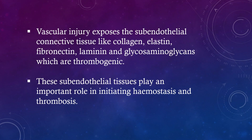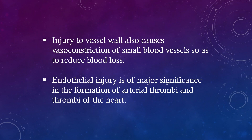Vascular injury exposes the subendothelial connective tissue like collagen, elastin, fibronectin, laminin and glycosaminoglycans, which are thrombogenic. These subendothelial tissues play an important role in initiating hemostasis and thrombosis. Injury to the vessel wall also causes vasoconstriction of small blood vessels to reduce blood loss. Endothelial injury is of major significance in the formation of arterial thrombi and thrombi of the heart.